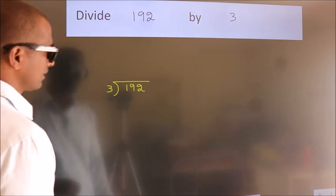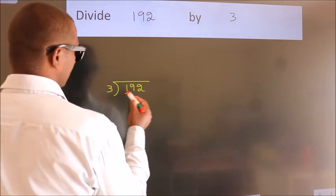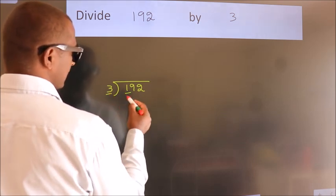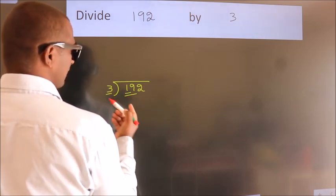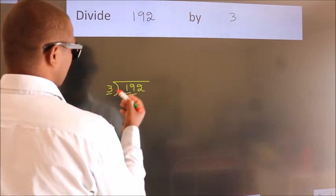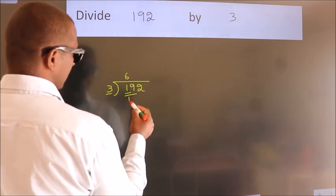Next. Here we have 1, here 3. 1 smaller than 3. So we should take two numbers, 19. A number close to 19 in 3 table is 3, 6, 18.